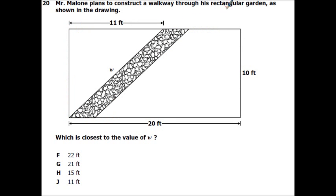Alright, Mr. Malone plans to construct a walkway through his rectangular garden as shown in the diagram. Which is closest to the value of W? So W is just this line right here. This is a rectangular garden, so you know that this is a right angle. Therefore, we can use the Pythagorean theorem. So since this side, since it's a rectangle, these two sides are equal. So this is 10 feet. They told us that was 11. So if this is directly across from my right angle, it means this is my hypotenuse. So I can go 11 squared plus 10 squared equals C squared.